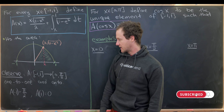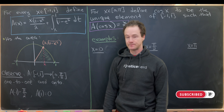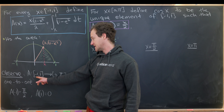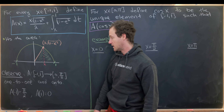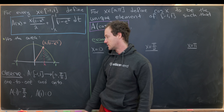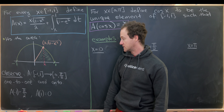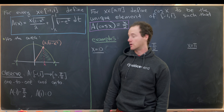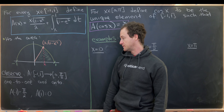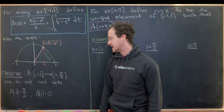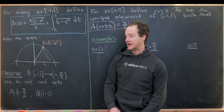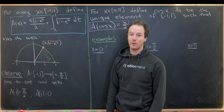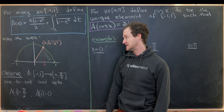Now let's note that A is a one-to-one and onto function from the interval negative one to one, to the interval zero to pi over two. Furthermore, A evaluated at negative one is pi over two, and A evaluated at one is zero.